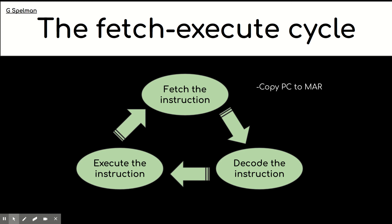So when an instruction has been fetched, the program counter has the address of the next instruction that needs to be fetched, and that's copied to the memory address register. The instruction is fetched from memory, and that instruction is put into the memory data register. The value in the program counter is increased by one.